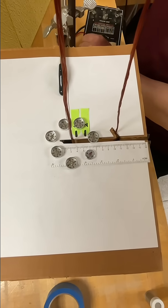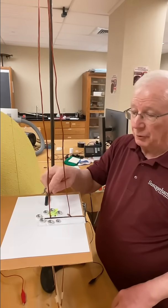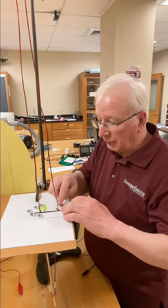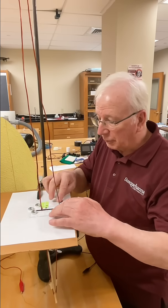Okay, we've seen the magnetic field around wire one, number one. Now I'm going to move the compasses over to see what's happening around wire number two.